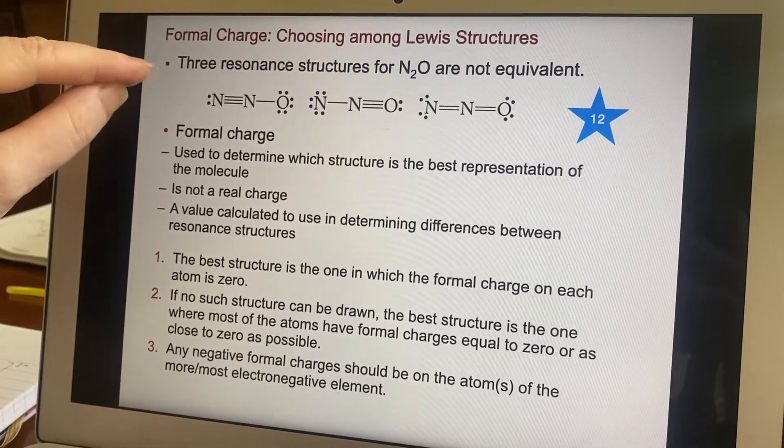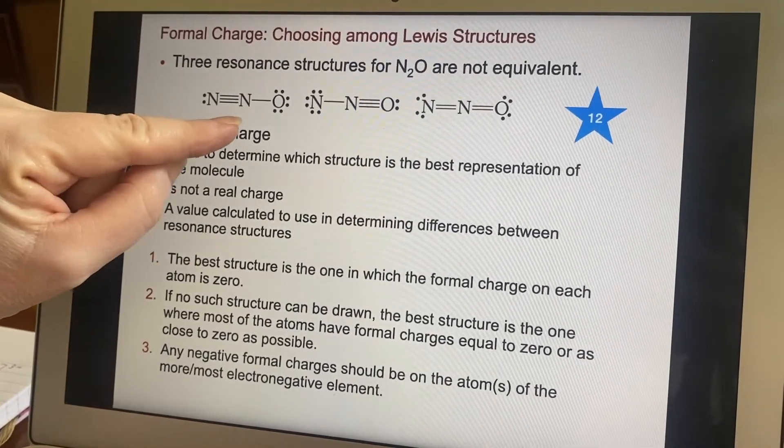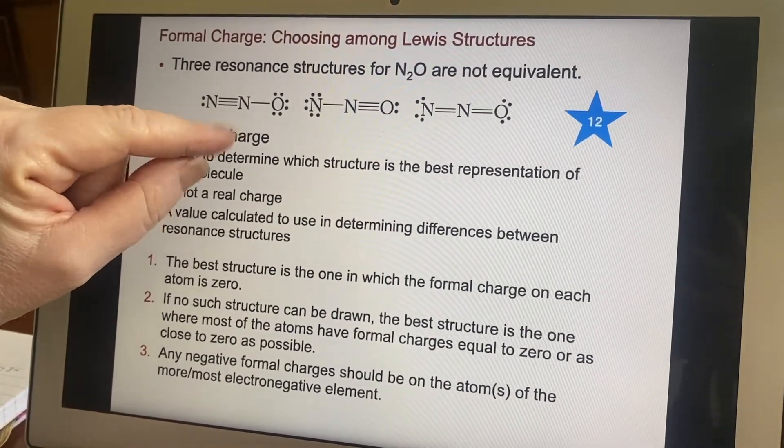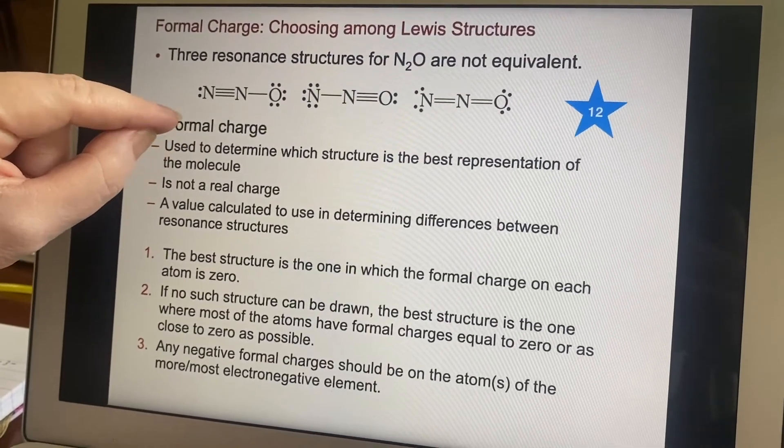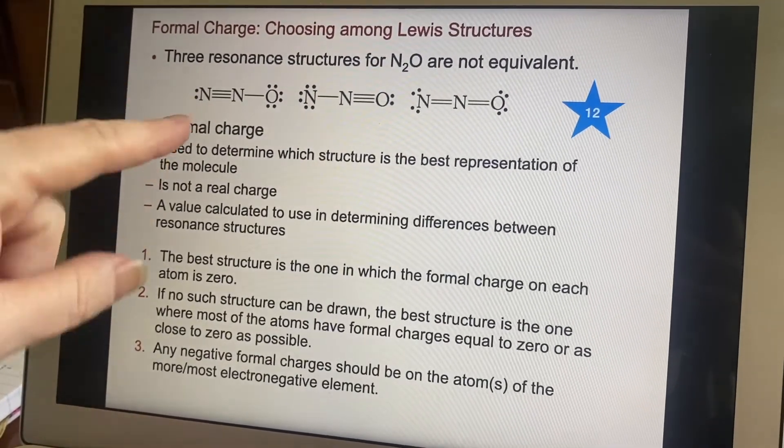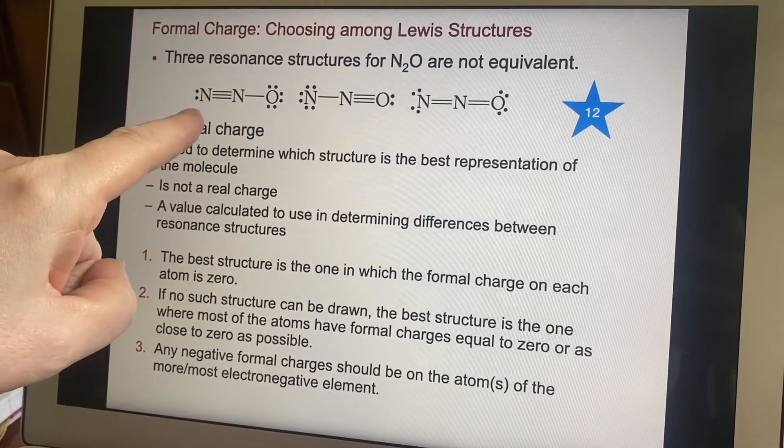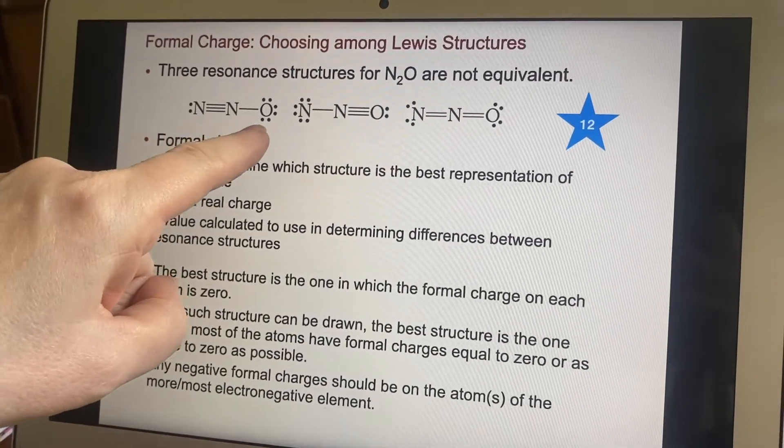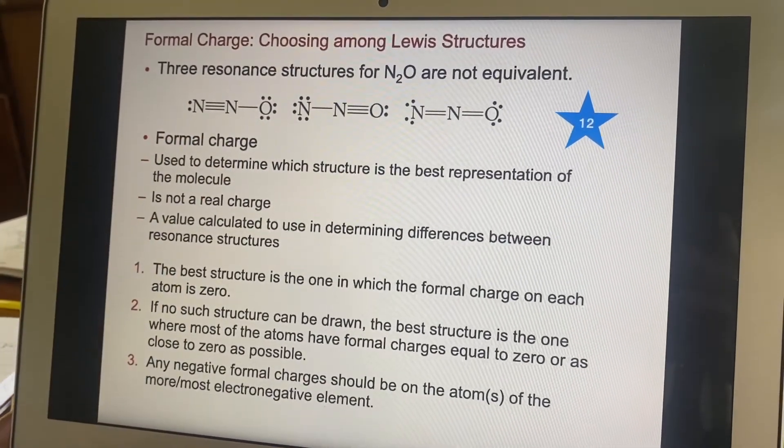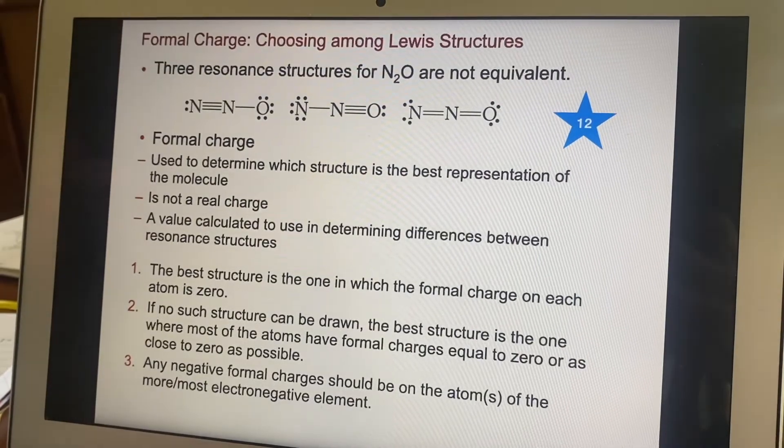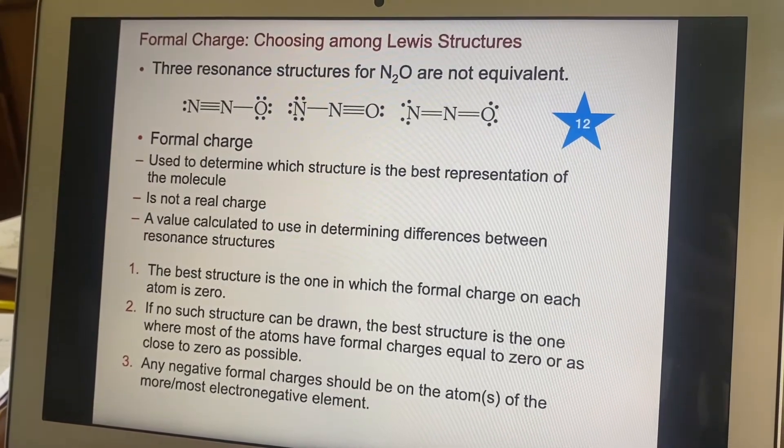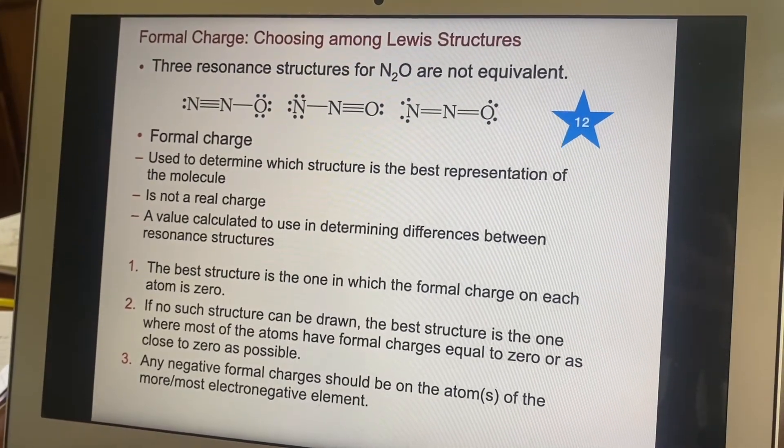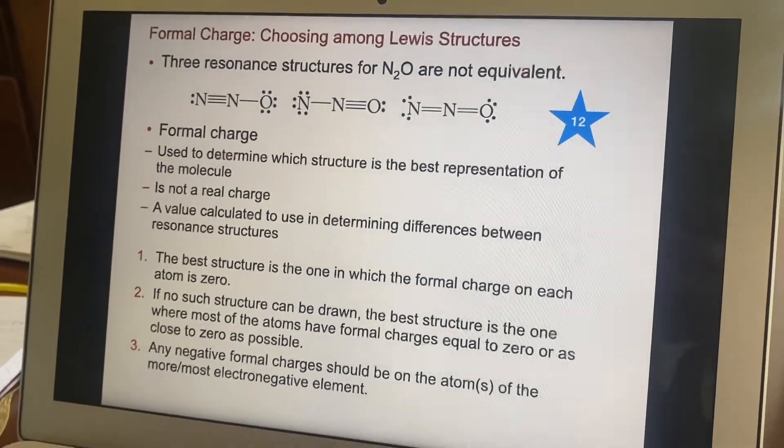Now here are three resonance structures for N2O, dinitrogen monoxide. You will notice that we have the Ns and then the O. We do not have O in the middle, even though it's two Ns and an O. Why couldn't we put one with an O in the middle? So let's start with why not?